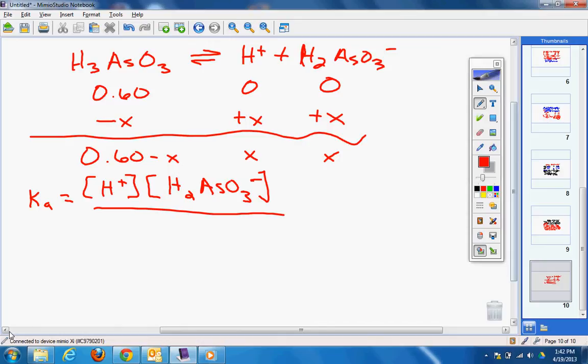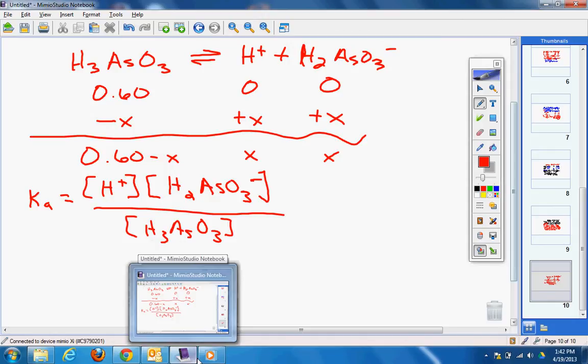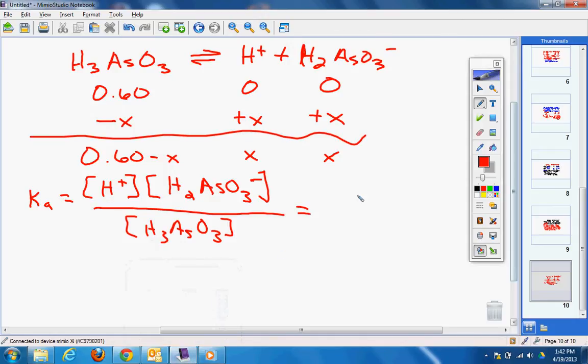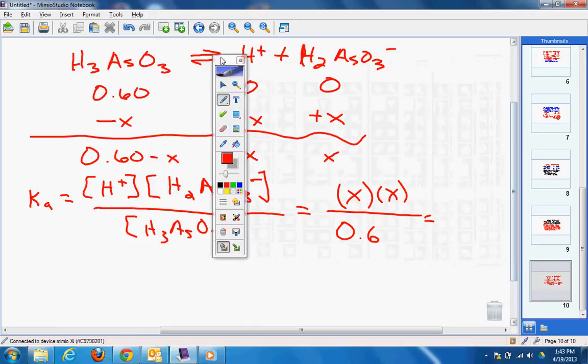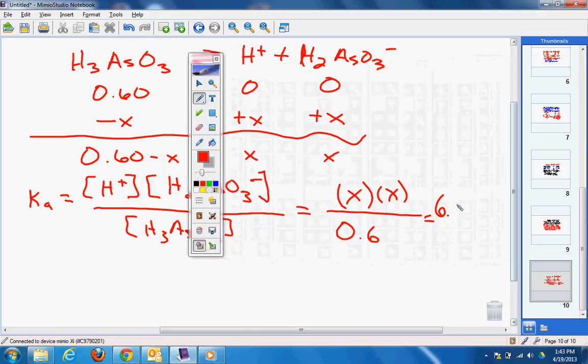This would be like part A or B. Ka equals X times X over the H₃AsO₃, which equals X times X over 0.6. We're going to get rid of that for all AP, and that's going to equal our value we were given at the beginning: 6.0 times 10 to the negative 10th.